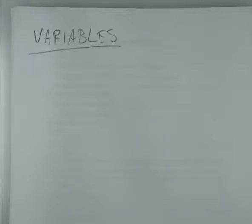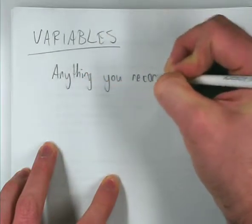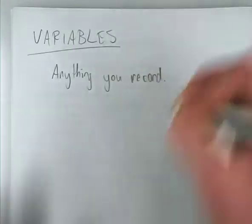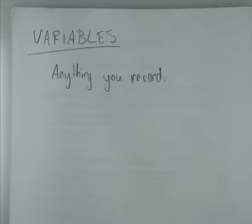In statistics, a variable is anything you would write down about whatever it is you're recording information about. It's called a variable because it's variable — different people, times, objects, or situations will give you different answers. It might be numbers, it might be words — anything you write down counts as a variable.